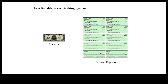Therefore, in a fractional reserve banking system, the central bank does not have to print $100,000 of currency to create $100,000 of money supply. Instead, the central bank needs to print only a fraction of the total money supplied. This fraction depends on the average circulation needs of the banking customers.